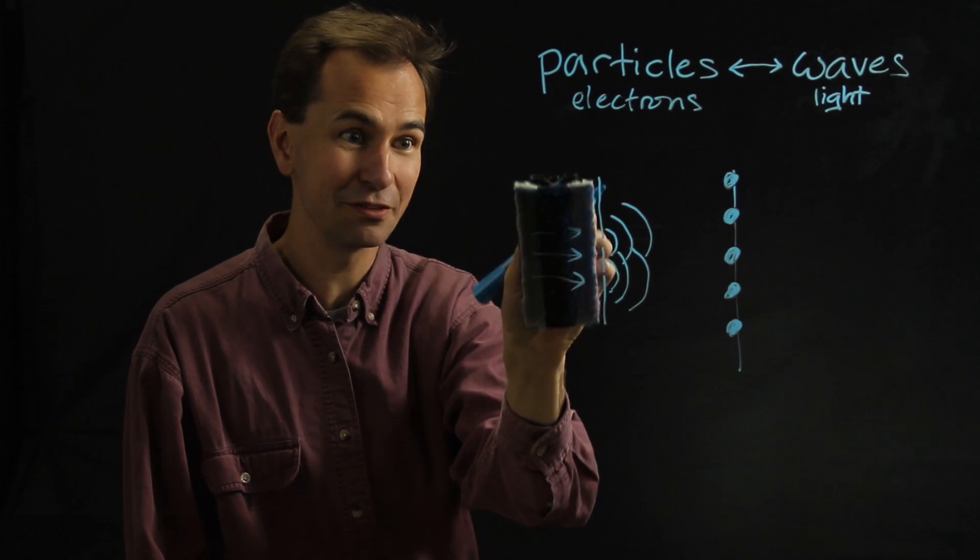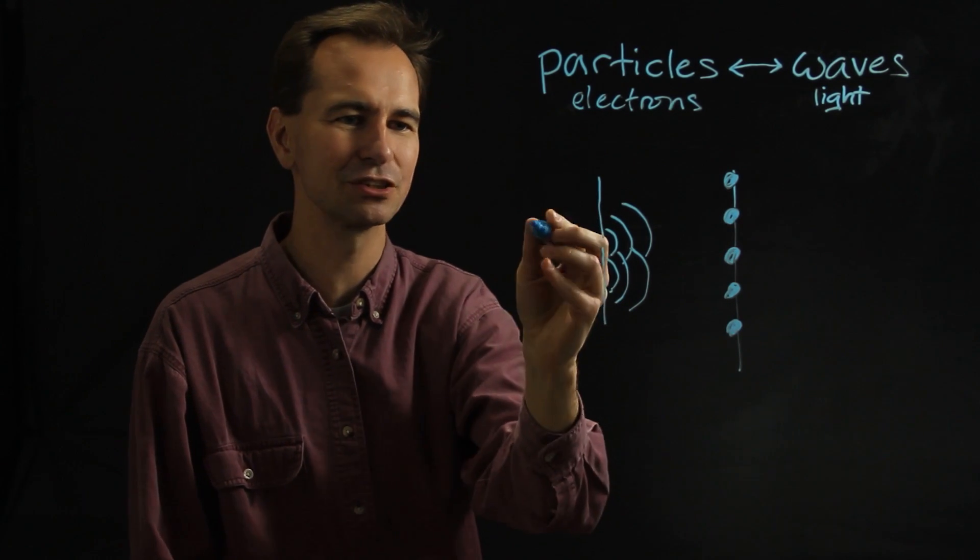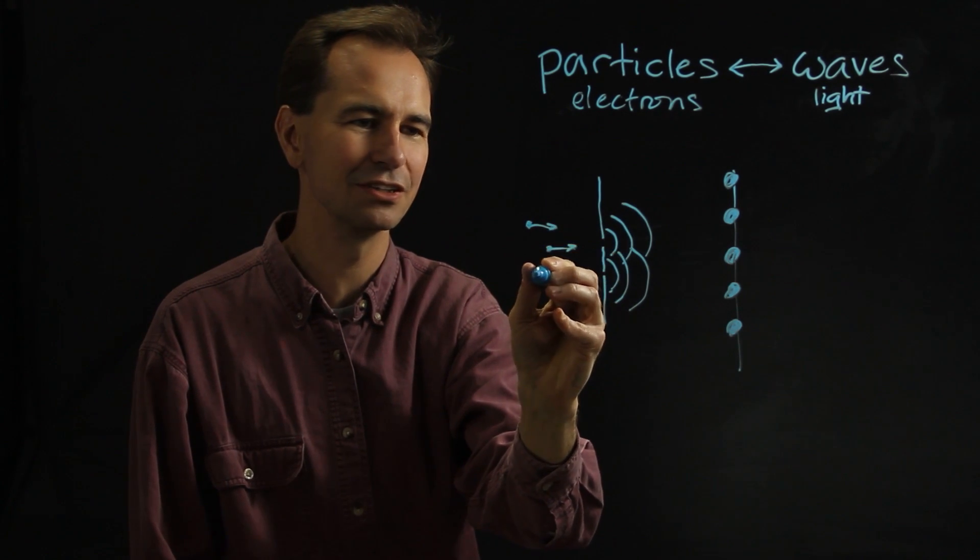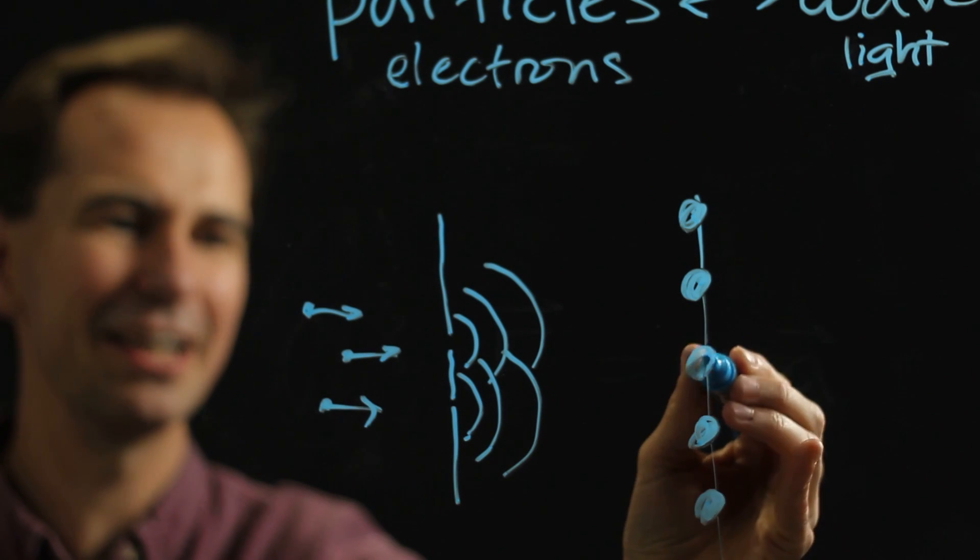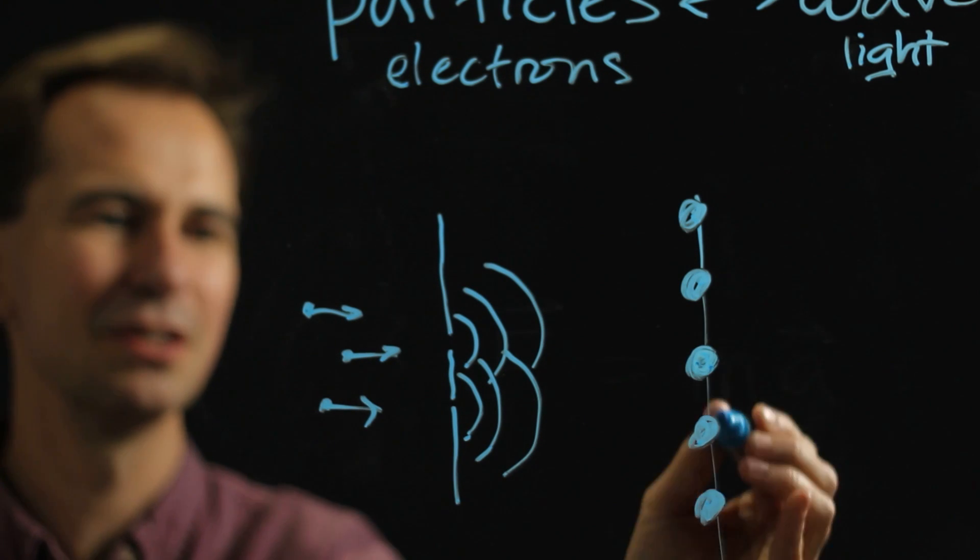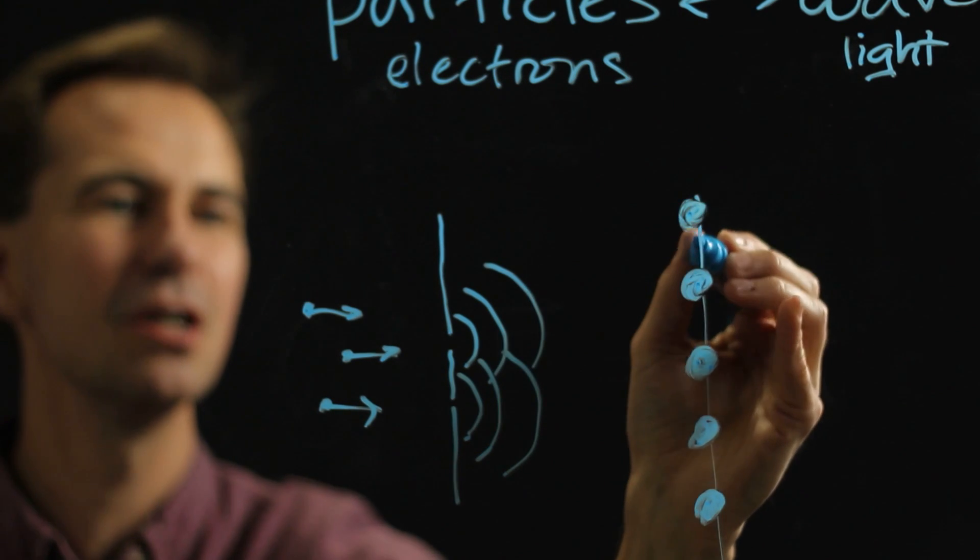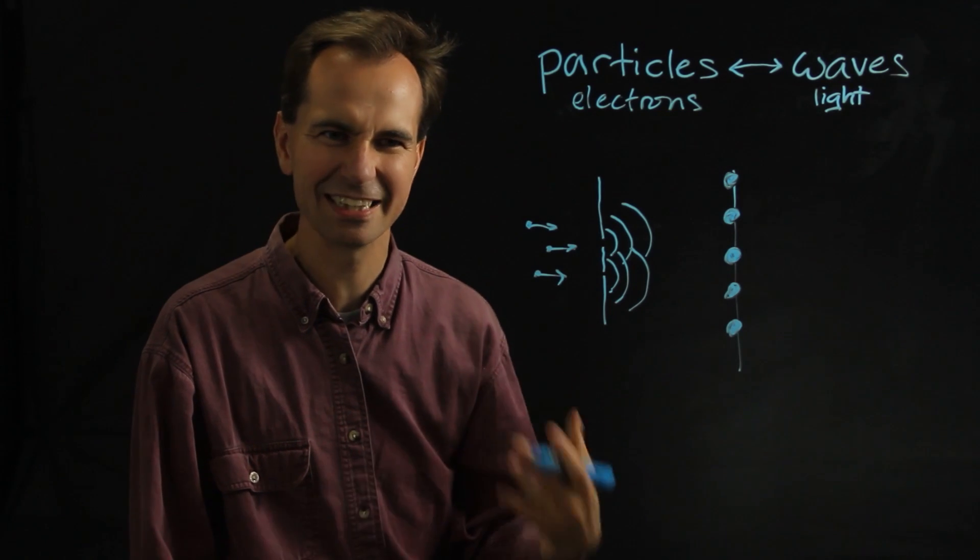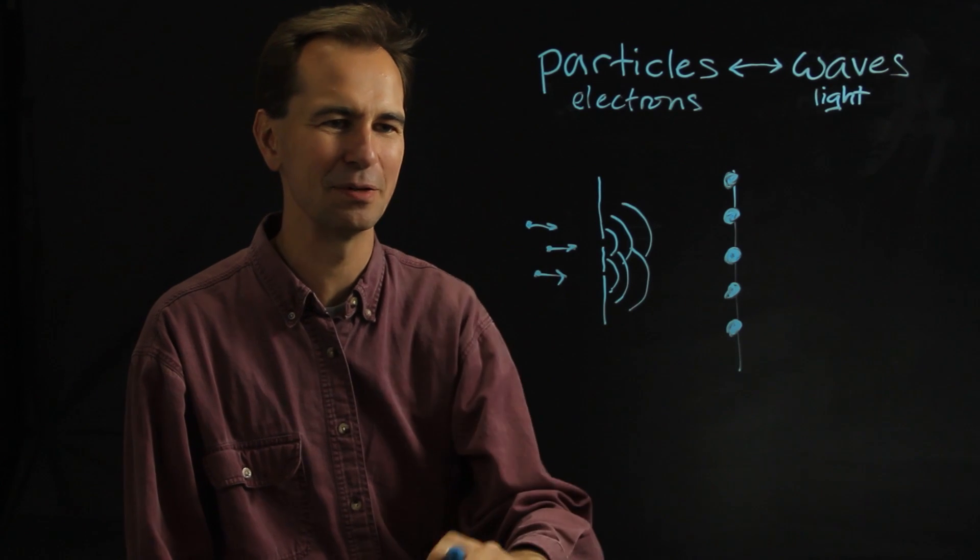Well it turns out that if you take the light away and you do the same thing with a beam of electrons, so got all these little electrons coming along and hitting this screen, guess what? They do the same thing. You end up with a region here where a whole bunch of electrons hit and a region here where a whole bunch of electrons hit. And then between them places where not many electrons hit. So it's as if the electrons are waves instead of particles.